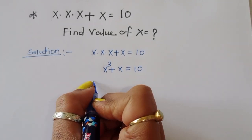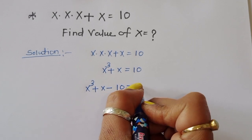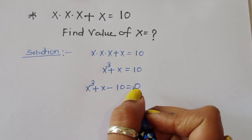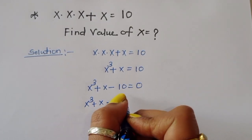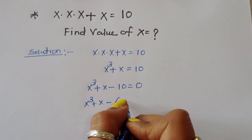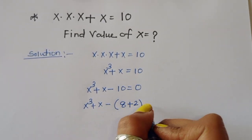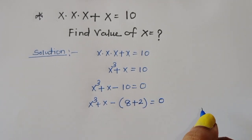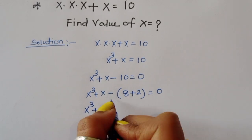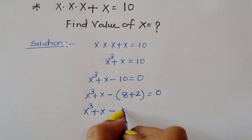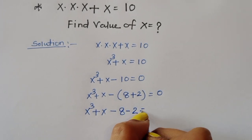We can write x cube plus x minus 10 is equal to zero. Now, 10 we can write as 8 plus 2, so x cube plus x minus 8 minus 2 is equal to zero.